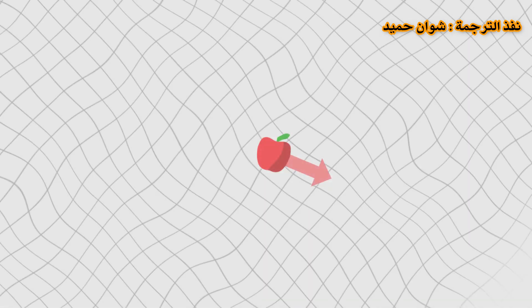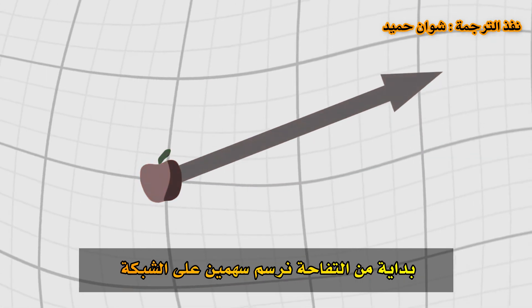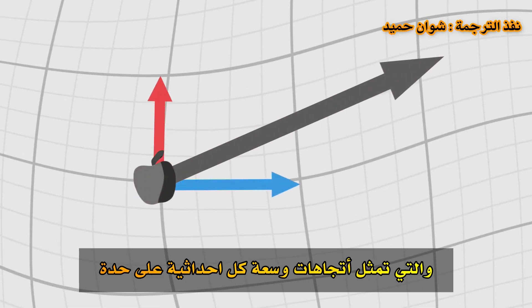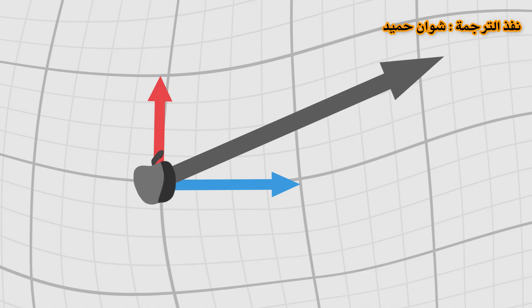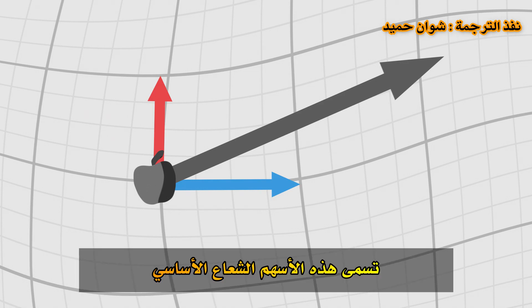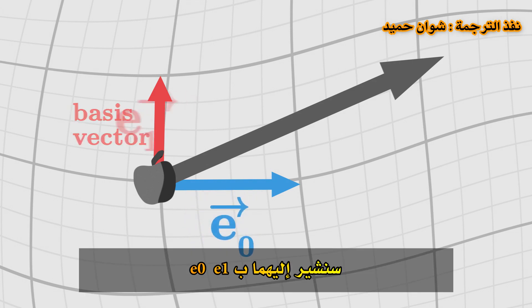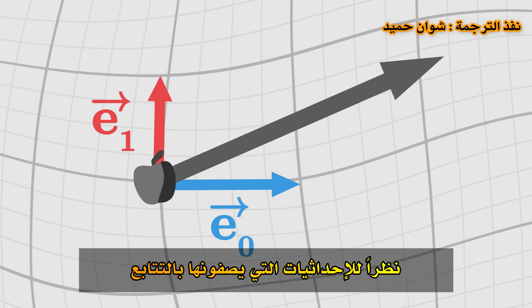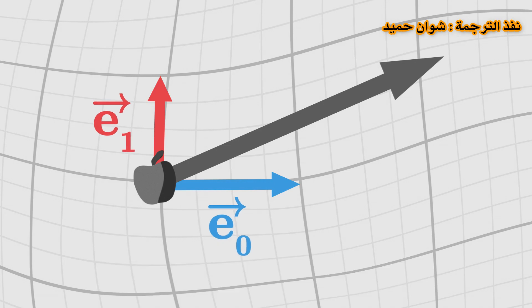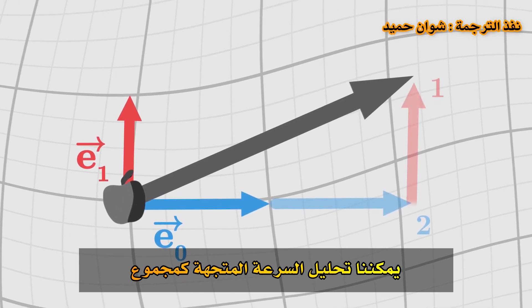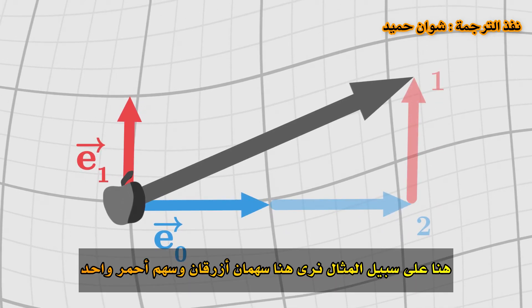We now want to describe velocity using our coordinates. Starting from the apple, we draw two arrows on the grid that represent the directions and amplitudes of each coordinate. These arrows are called basis vectors. We will denote them E0 and E1 given the coordinates they respectively describe. With these two basis vectors, we can decompose the velocity as a sum — for example, two blue arrows and one red arrow.